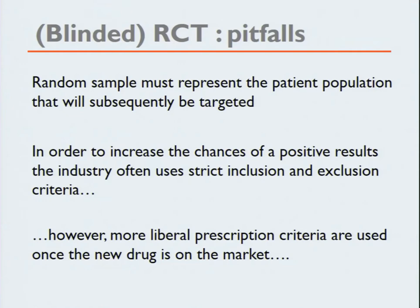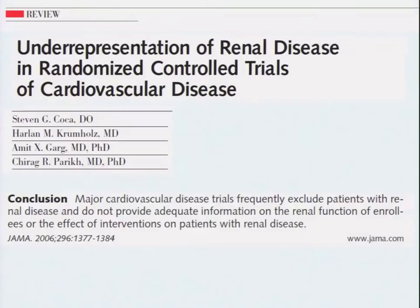One pitfall: the random sample must represent the patient population that will subsequently be targeted. Don't forget that the pharmaceutical industry, in order to increase the chances of a positive result, often uses strict inclusion and exclusion criteria — but afterwards they will ask for a more liberal prescription once the drug is on the market. This is a well-described problem: patients with chronic dialysis or with the worst coronary heart disease are often excluded from trials. So we extrapolate study results from a rather normal population to a population on chronic dialysis, where you do not know whether the benefit-to-harm balance still holds. It's similar with pediatrics — many children receive drugs designed for adults.